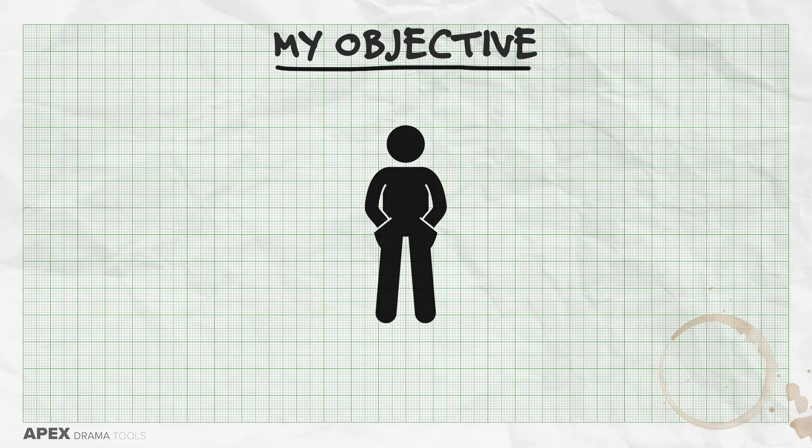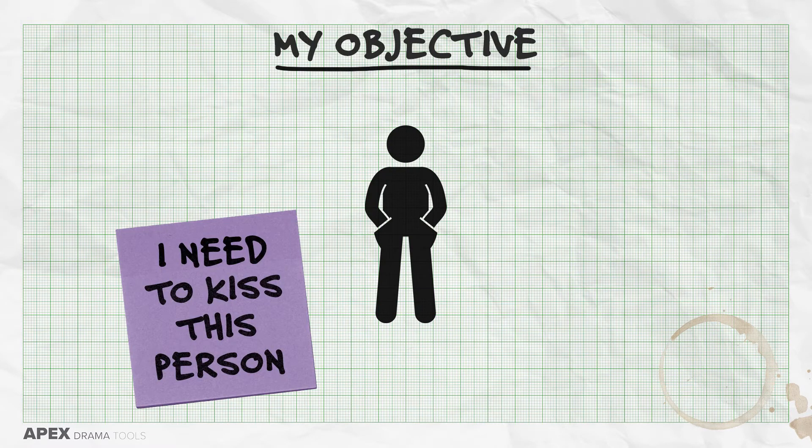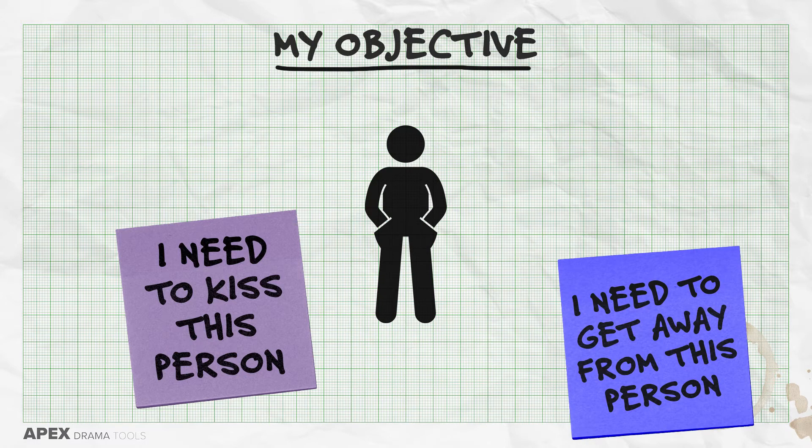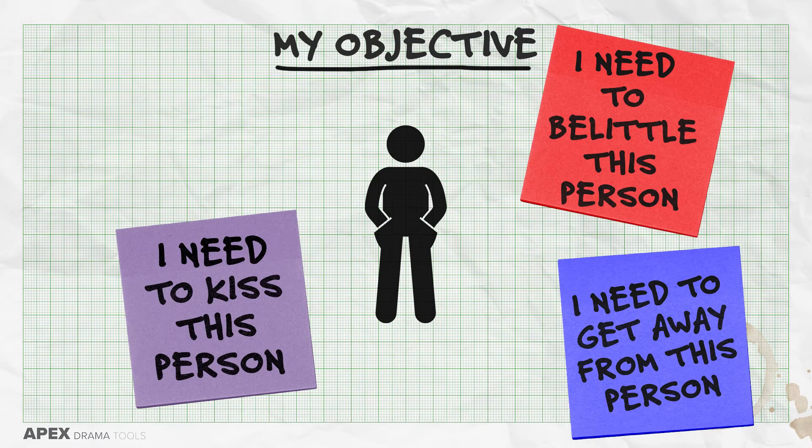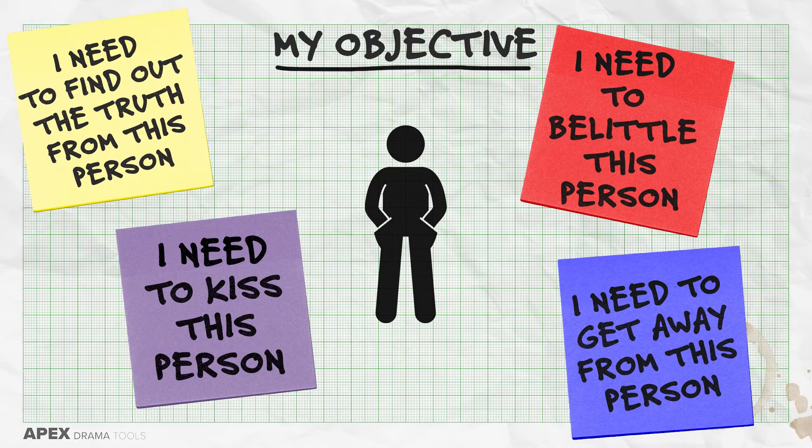So we play objectives. Our objectives feed into our super objective. An objective is a smaller, more attainable thing to desire and target in a scene. Ask yourself: what does your character need in this scene? Is it — I need to kiss this person, I need to get away from this person, I need to belittle this person, I need to find out the truth from this person. You as the character have an objective or several objectives, and you arrive at the start of the scene aiming to achieve or complete them.